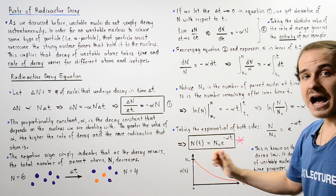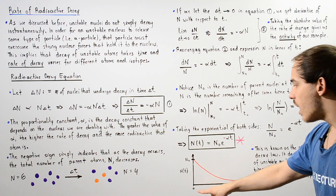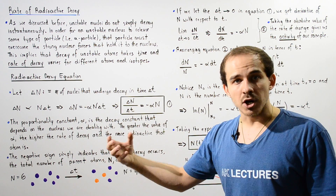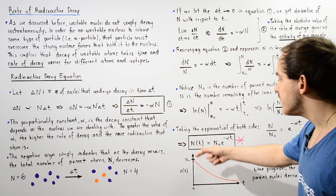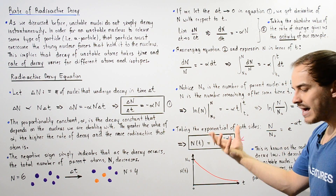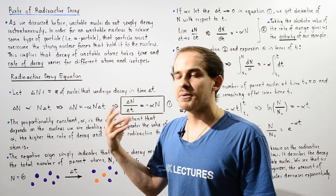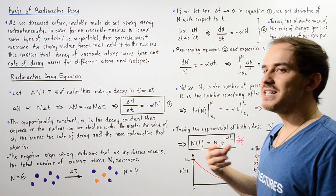If we plot this on the xy-axis, where the x-axis is time and the y-axis represents the remaining number of unstable isotopes that have not yet undergone decay, we get an exponential curve. We see that radioactive decay of atoms takes place exponentially. This is the radioactive decay law — it describes the decay of unstable nuclei, showing that as time progresses, the number of remaining parent nuclei decreases exponentially.